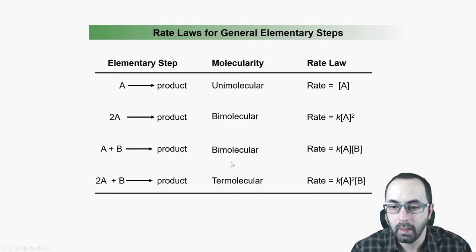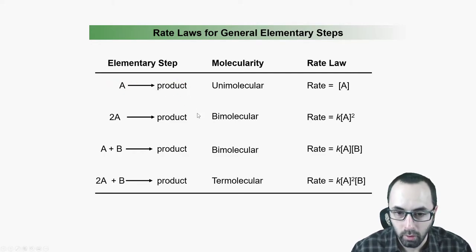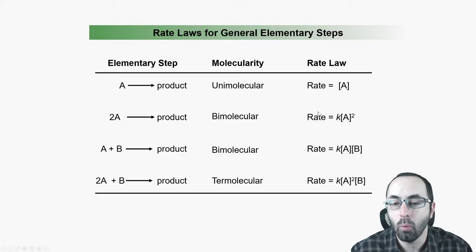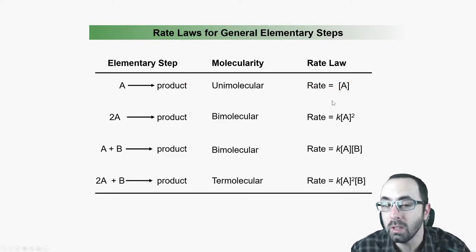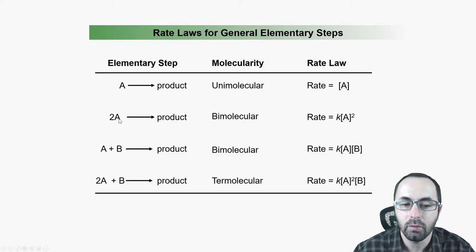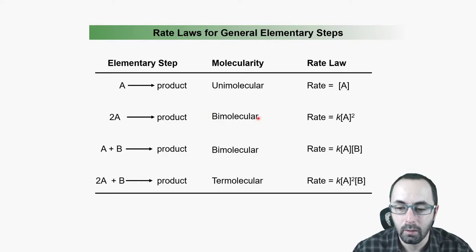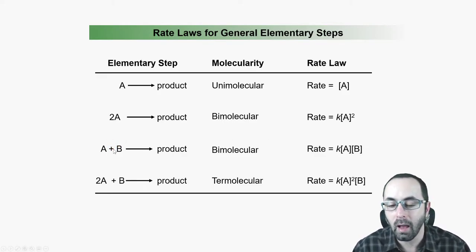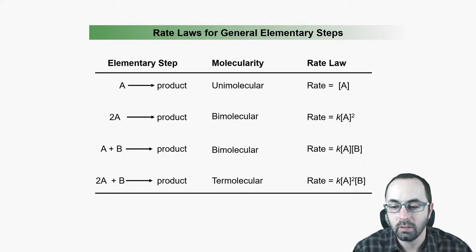In terms of molecularity: a one molecule breaking up into more than one is referred to as unimolecular, and it only depends on the concentration of that one molecule. The rate law can describe this elementary step as rate equals concentration to the first power — only because this is an elementary step. If we have two reactive molecules A hitting each other, we say it's a bimolecular reaction, and the rate depends on the concentration of A squared. If we have two reactants A and B that must collide, this is also bimolecular. The rate law will be the rate constant times [A] to the first power times [B] to the first power.